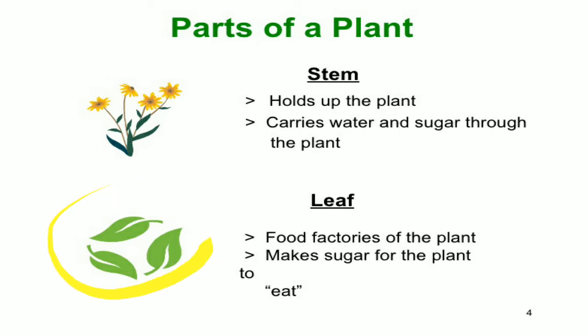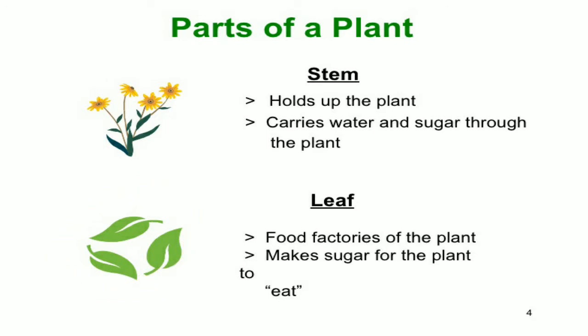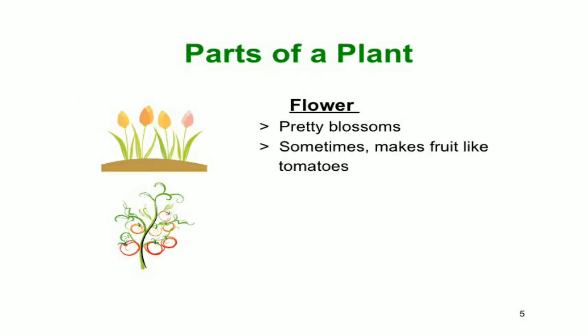And then, leaf. Here we can see a photograph of a leaf. The leaf is the food factory of the plant and makes sugar for the plant to eat. The leaf is a very important part of the plant. You all understand about parts of plants. Next, parts of plants — and last, flowers.